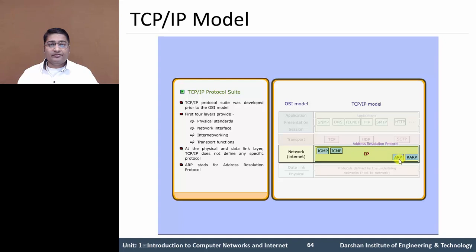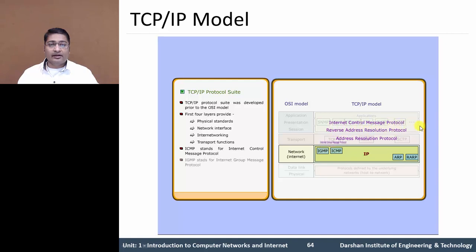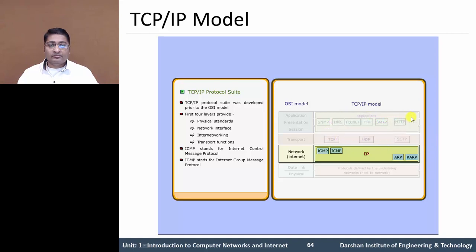ARP stands for Address Resolution Protocol. RARP stands for Reverse Address Resolution Protocol. ICMP stands for Internet Control Message Protocol. And IGMP is Internet Group Message Protocol.